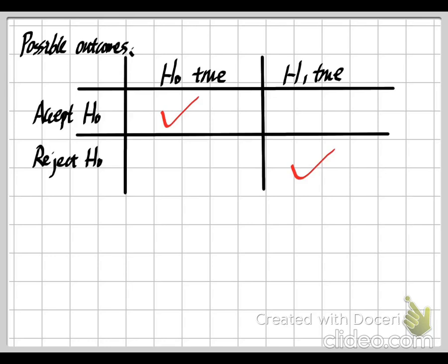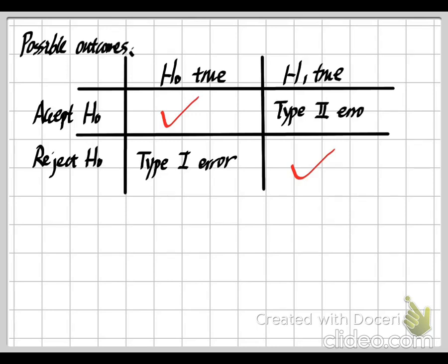However, the other two cases represent important errors. The first one is if our null hypothesis H0 is correct, but our conclusion is to reject H0 — we call this a Type 1 error. The other type of error is if H0 is wrong and H1 is correct, but we still accept our null hypothesis H0 — we call this a Type 2 error.